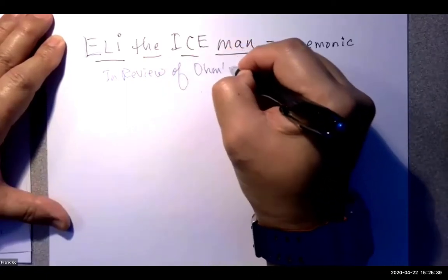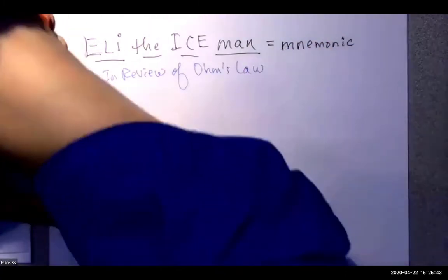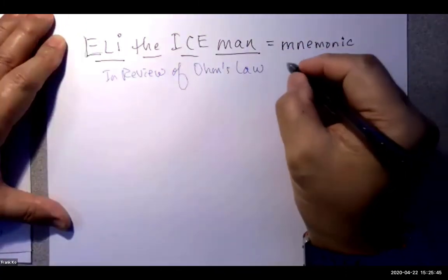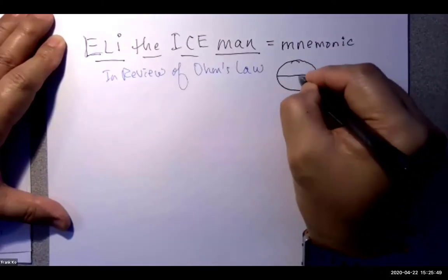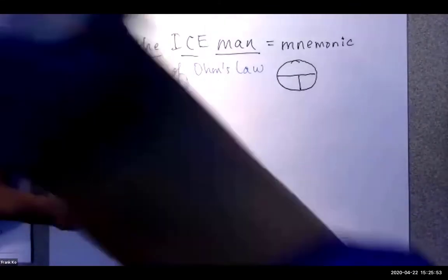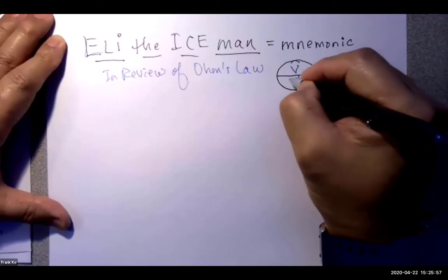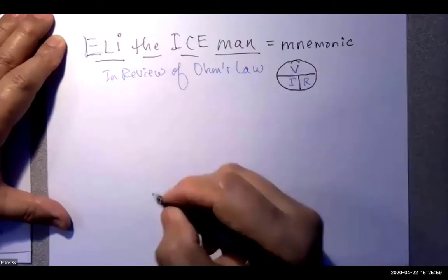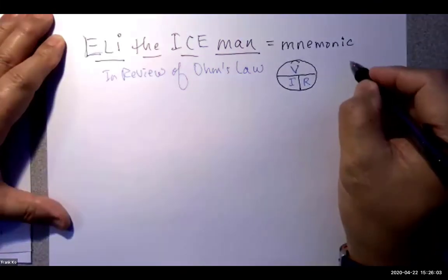In review of Ohm's Law, you remember that we had a circle. And in the circle, we had a line and another line. And you remember what we put in the circle was a V up here, was an I, and an R over here.